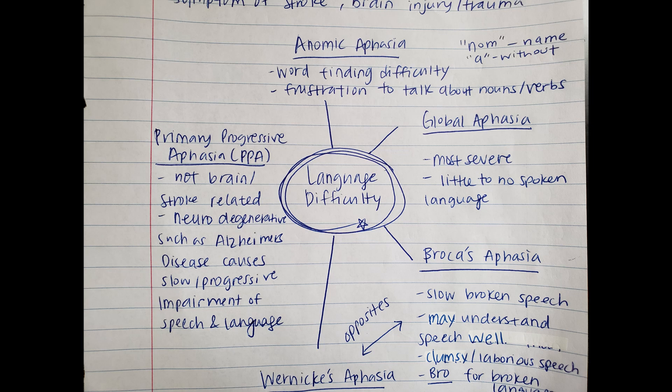From there, I want to discuss anomic aphasia. Anomic aphasia is when you have word-finding difficulty. I feel like I have anomic aphasia sometimes, especially after a long day of working and communicating with a lot of different people. I start to forget the word I'm trying to pull out of my brain — it's like the word is there, but it's frustrating because I just can't get it out of my mouth. People who have anomic aphasia are going to experience a lot of frustration, especially when talking about certain nouns and verbs.